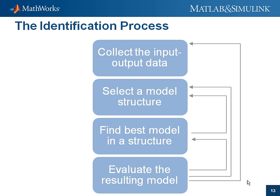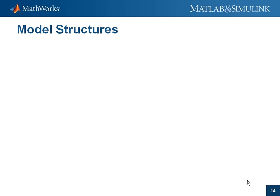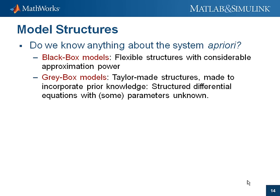The most difficult problem is finding a suitable model structure. If we have no prior information about the system, we must stick to flexible model structures with considerable approximation power — these are called black-box models. If we know a fair amount of the physics, like Newton's laws of motion for an aircraft, but are uncertain about constants like aerodynamic derivatives, we build a model incorporating that physical knowledge with unknown physical constants as parameters — that is known as grey-box models.